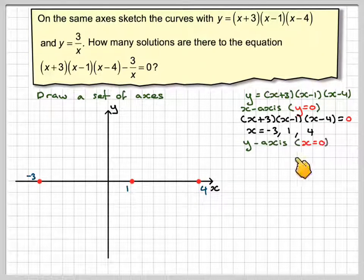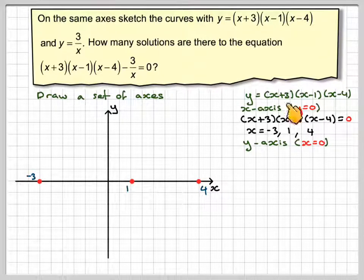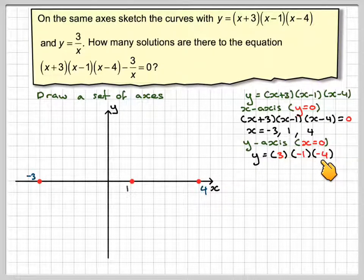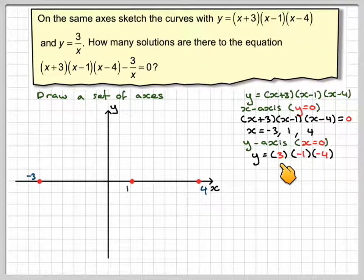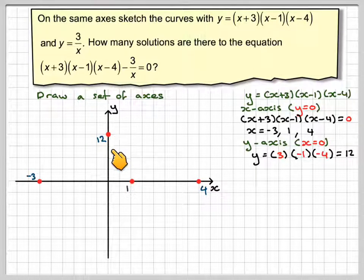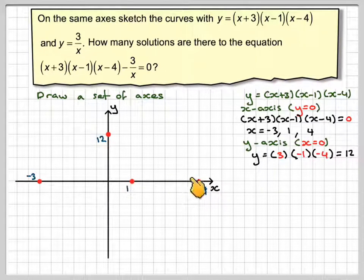Then for the y-axis, x equals 0, so we have 3 times minus 1 times minus 4. Minus 1 times minus 4 gives plus 4. 4 times 3 gives 12. So mark on the point 0, 12. The scale here is going to be different to the scale here.